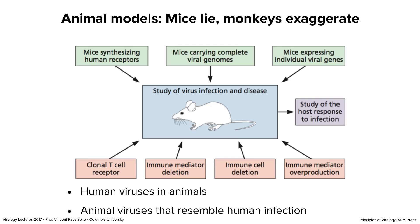When you have a virus infection, T-cells are amplified that recognize specific epitopes, and you can purify one clonal population and put it in the mouse to see what happens. You can delete immune mediators — we've talked about experiments where we take out antibodies or T-cells — or you can over-produce immune mediators. Mice are genetically manipulable: you can knock out genes or add genes — a lot of things you can't do with other animal models. We also have two general approaches to studying viruses in mouse models.